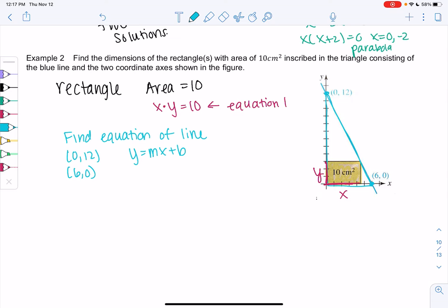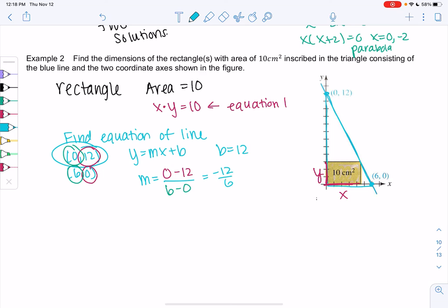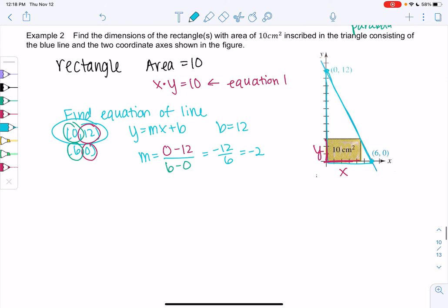I already know b. b is 12 because we have 0, 12. And then we just need slope. So slope will be y2 minus y1. 0 minus 12 over x2 minus x1. So 6 minus 0. So negative 12 over 6 or negative 2. So we get y equals negative 2x plus 12 for equation 2.